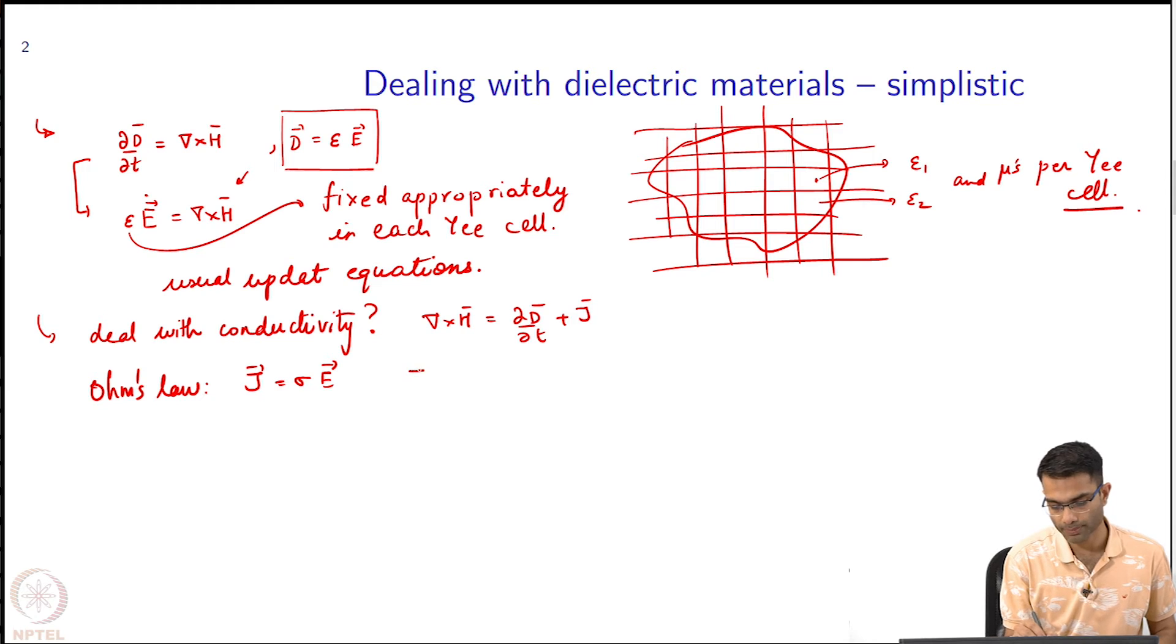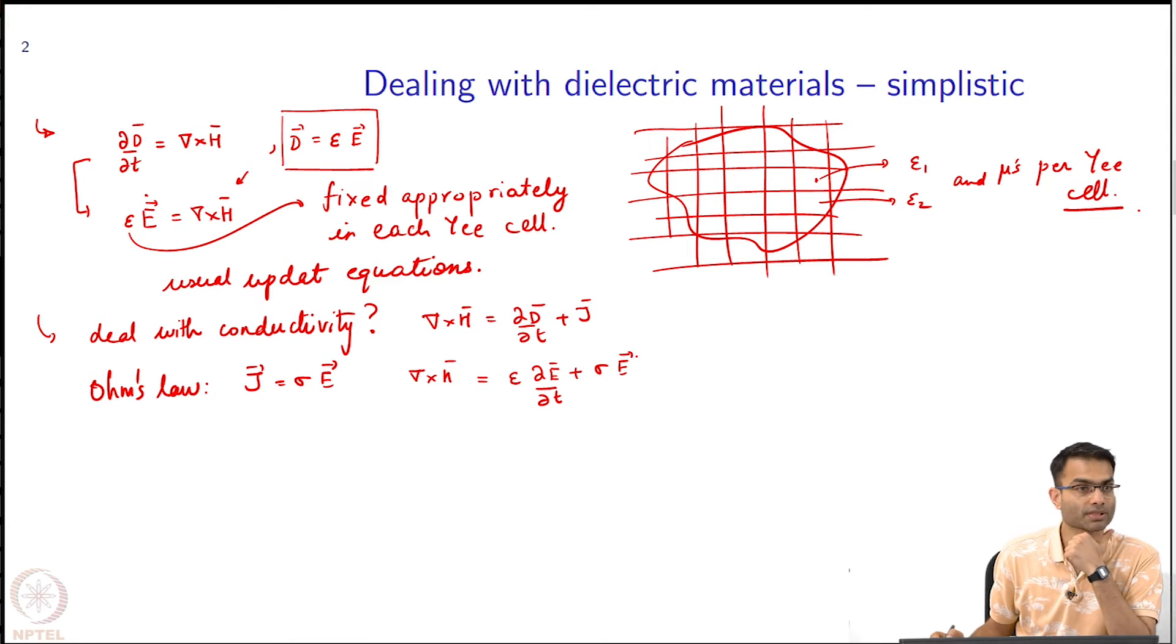Then this update equation becomes curl of H is equal to epsilon d E by d t plus sigma E. Now let us put this into our FDTD notation.